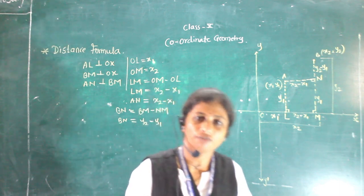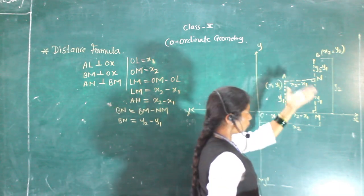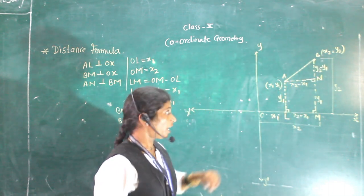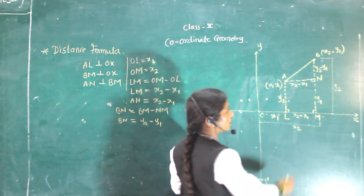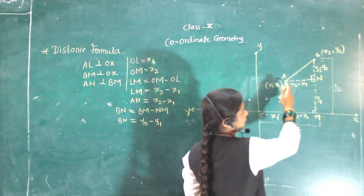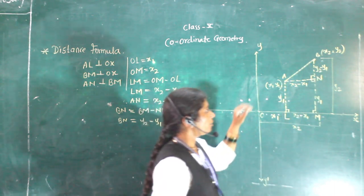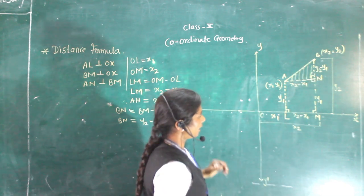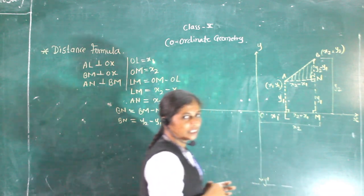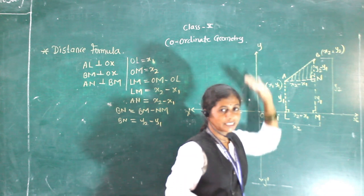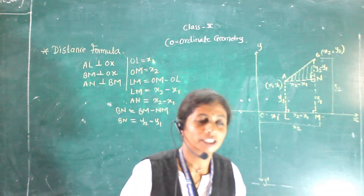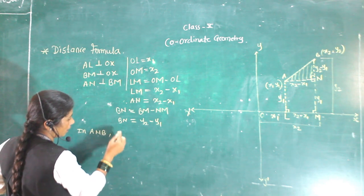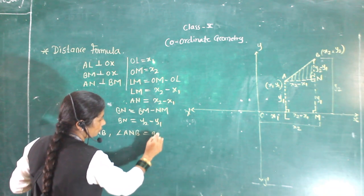Now we actually have to find the distance between A and B. For that purpose we join AB. This angle at N is 90 degrees because AN is perpendicular to BN. So triangle ANB is a right-angle triangle. We can use the Pythagorean theorem. In triangle ANB, angle ANB equals 90 degrees.